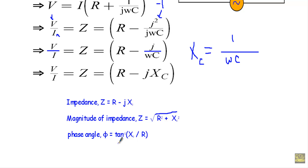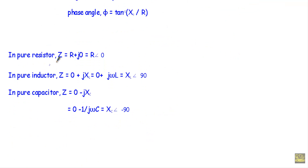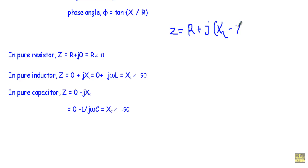What is the impedance of a pure resistor? In a pure resistor there is no imaginary part, so impedance Z equals R + j0. Using the general formula Z equals R + j(XL − XC), in a pure resistor there is no inductance and no capacitance, so those two terms are zero. Therefore Z equals R, or in polar form R∠0°.